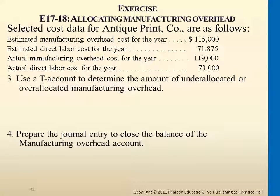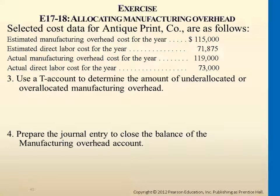What about the debit side? 119,000 — and what is this? The actual cost incurred that we only know by year end, December 31st. So this is the cost that we assign to different jobs. Do we have under-allocation or over-allocation? Under. We assigned too little cost to the jobs, so we have a balance here of 2,200.